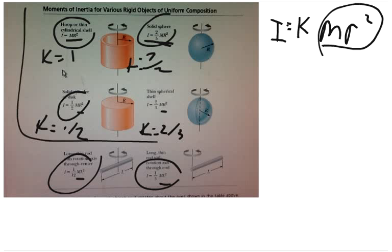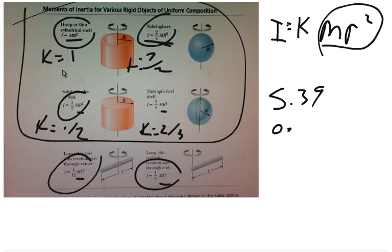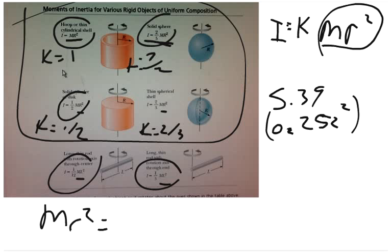For Part A, we need to find the moment of inertia for each object. MR² is constant across all four. Calculating: mass is 5.39 kg, radius is 0.252 m, so MR² = 5.39 × (0.252)². The result is MR² = 0.342 kg·m².